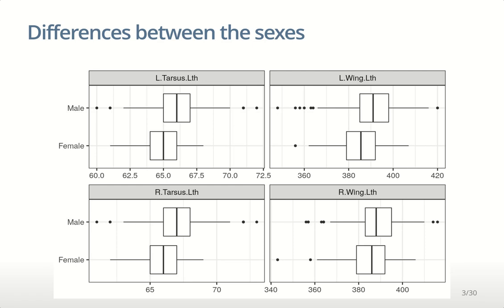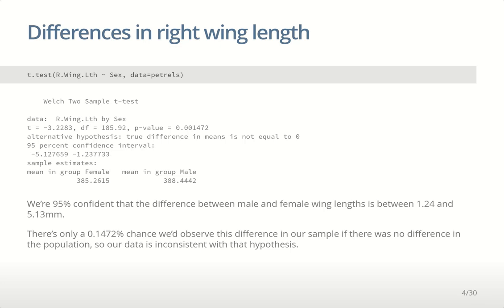With the petrels data, we noticed that there was a difference in size between the sexes, visible on most of the measures — there's a difference in right wing length, left wing length, left tarsus length, right tarsus length, and so on. It's a consistent difference in that males are larger on average than female birds. We showed that we could test this formally using the t.test function in R Studio to test whether there's a difference in the average right wing length between the sexes.